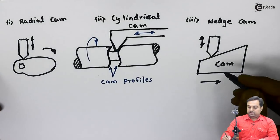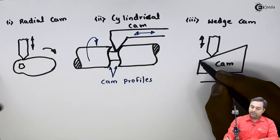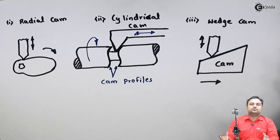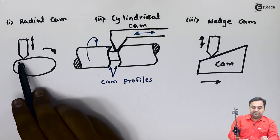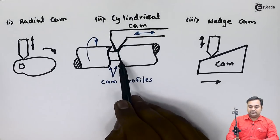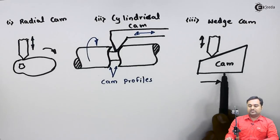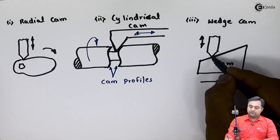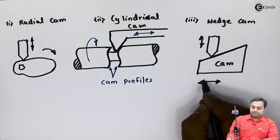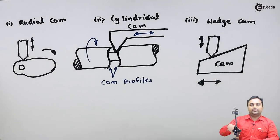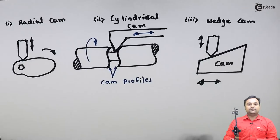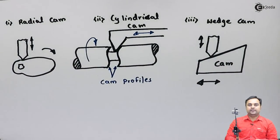The last type is the wedge cam. In a wedge cam, the cam is in the form of a wedge shape with increasing height — like a trapezium shape. This breaks the assumption that a cam is always circular or radial: a cam can be cylindrical with a profile cut inside a cylinder, or in the shape of a wedge. As the wedge cam moves in the horizontal direction, the follower moves up and down, reciprocating vertically. After this we will see the terminologies associated with cams and followers.